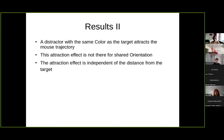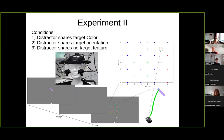We conducted a second experiment where we changed our search items slightly to try to boost this orientation effect. We made our items smaller, longer, and used cardinal orientations, which are easier to perceive. Since we already know that distractor-to-target distance does not affect the presence of the effect, we could also use fewer distractor positions. We also wanted to know whether there was a correlation between these effects in mouse tracking and eye movements — whether we could actually see attention shifts to the distractor in eye movements. So in the second experiment we also tracked eye movements.